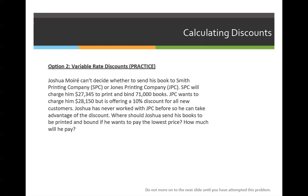Josh Moray can't decide whether to send his book to Smith Printing Company or Jones Printing Company. Smith Printing Company will charge him $27,345 to print and bind 71,000 books. Jones Printing Company wants to charge him $28,150 but is offering a 10% discount for all new customers. Joshua has never worked with Jones Printing Company before, so he can take advantage of the discount. Where should Joshua send his books to be printed and bound if he wants to pay the lowest price? How much will he pay?